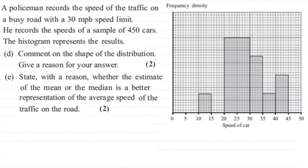Now for this last part, it's all about considering the shape of the histogram, describing the skewness. What we've got to do is comment on the shape of the distribution and give a reason for your answer.